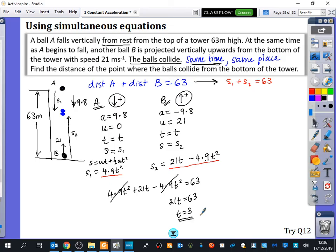Feels like we should be done. Are we done? No, we're not done, because they don't care about that. They want to find out the distance of the point where the balls collide from the bottom of the tower. So do I want S1 or do I want S2? I want S2. I want this one here. So I want S2. So we want S2. So I'm going to say S2 is equal to 21 times 3 minus 4.9 times 3 squared. So that will be 63 minus 4.9 times 9, which is 18.9 metres, which is 19 metres to two significant figures.